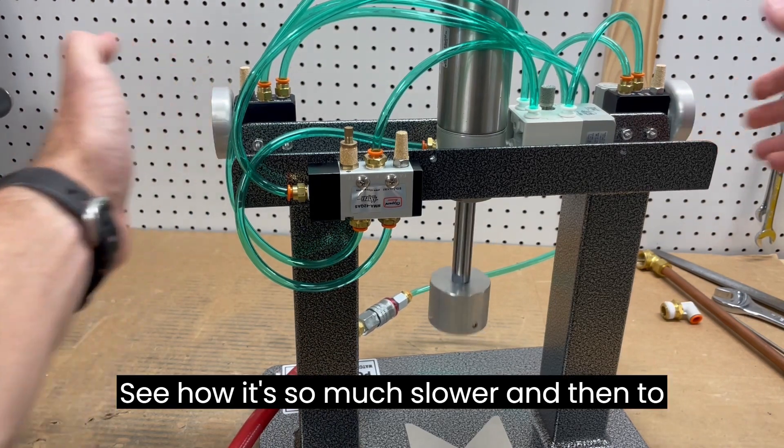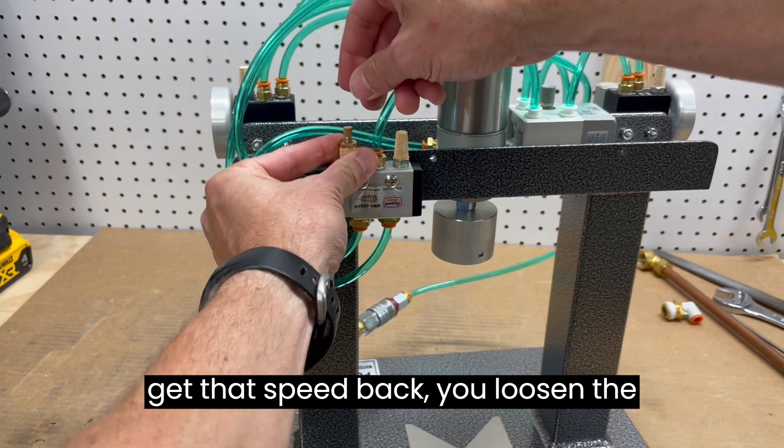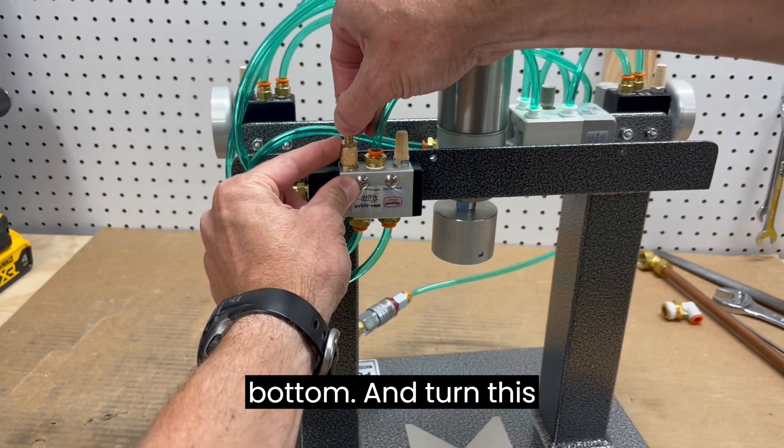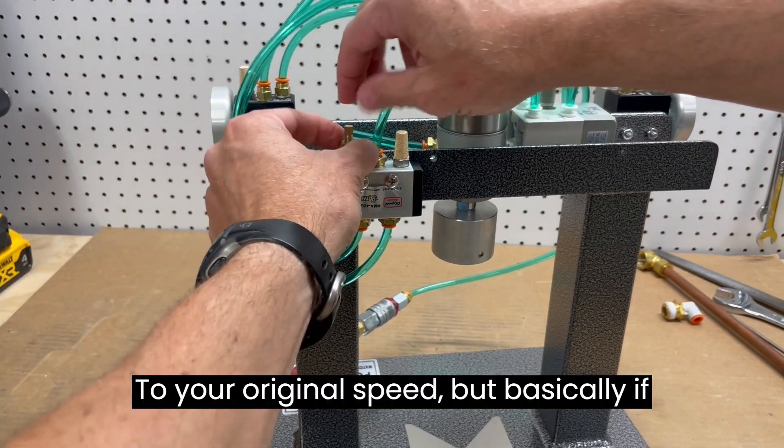See how it's so much slower. And then to get that speed back, you loosen the bottom and turn this counterclockwise to get back to your original speed.